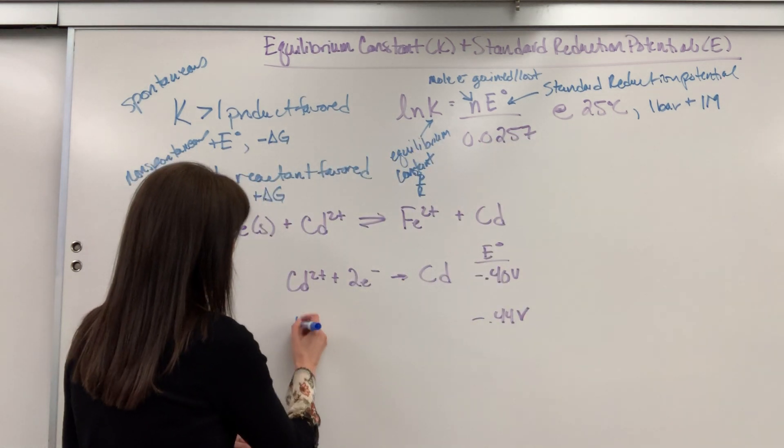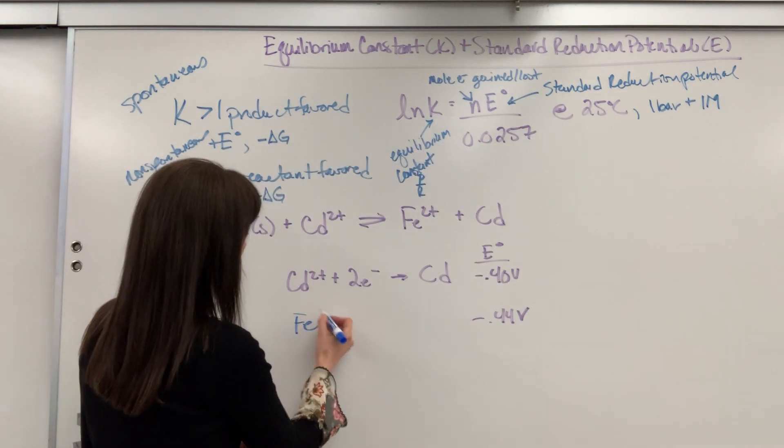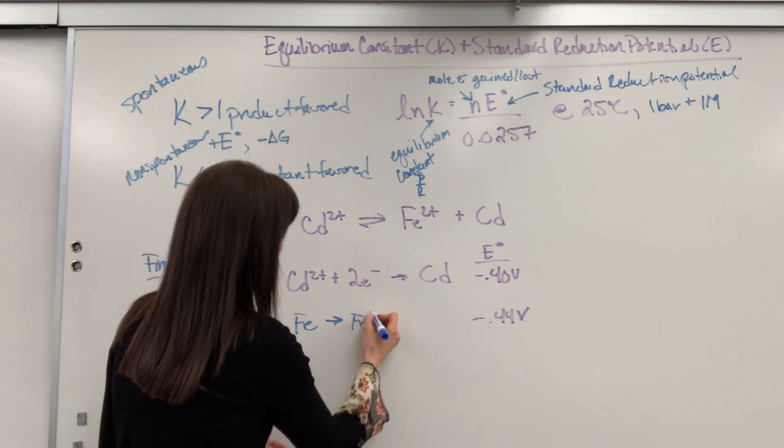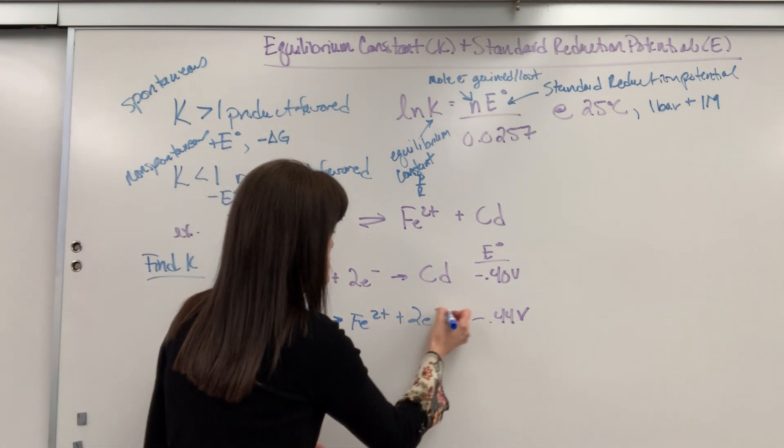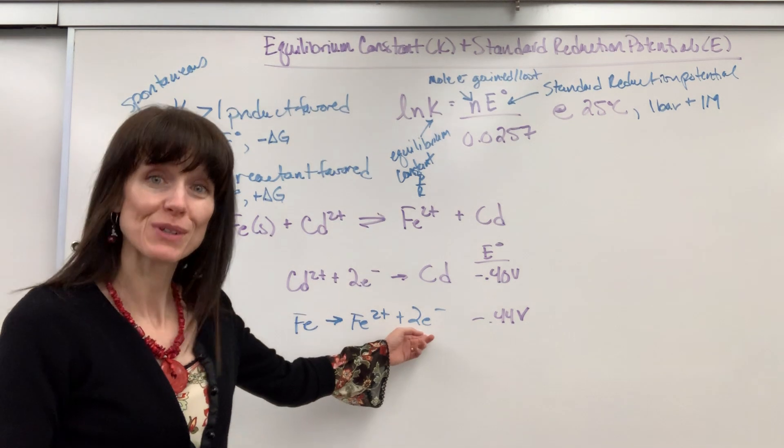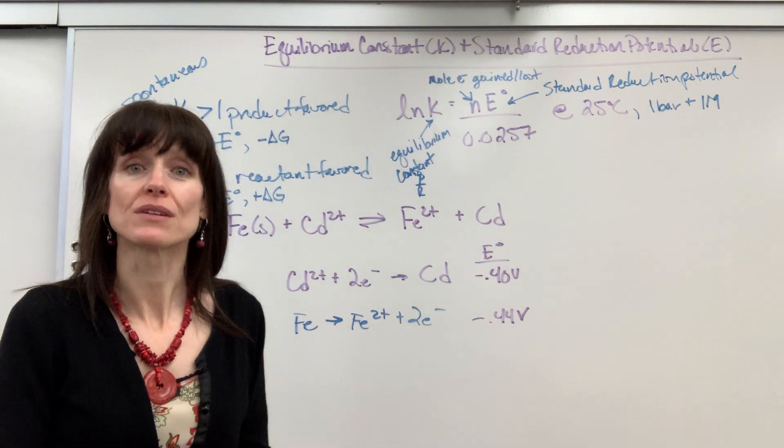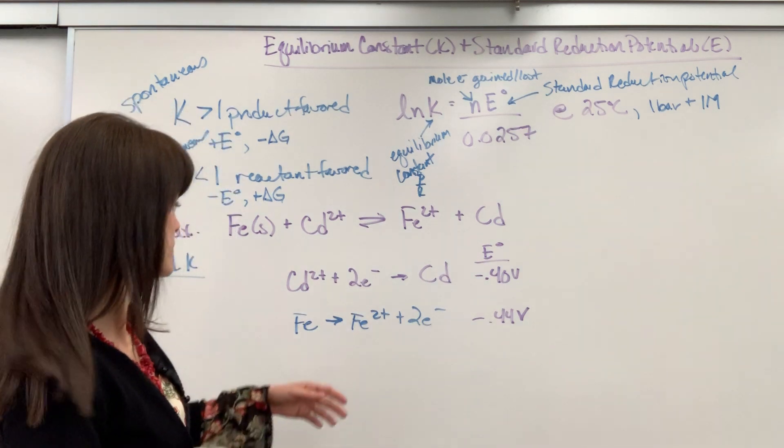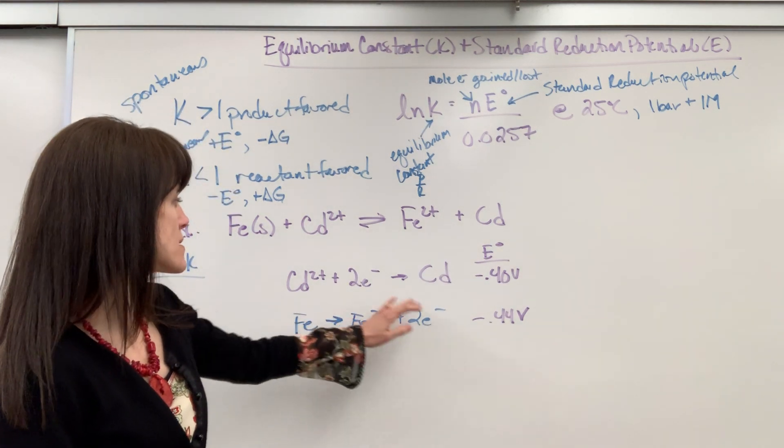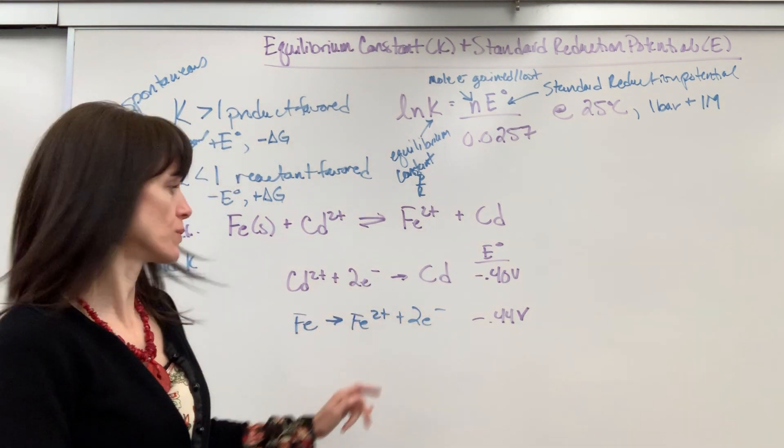We are going to have the iron yield the iron ion plus two electrons. So it's now written as oxidation. We're losing those two electrons. Before I can add this up, I have to make sure that the electrons are equal to each other. When I lose two electrons and gain two electrons, those numbers are equal.